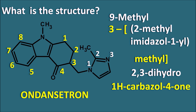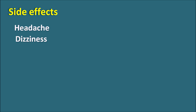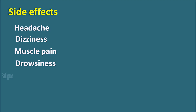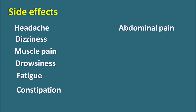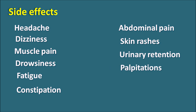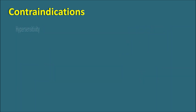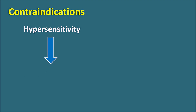Regarding side effects: Ondansetron mainly produces central side effects including headache and dizziness. Lightheadedness is observed in patients when the drug is given for longer periods. It can also produce muscle pain, drowsiness, fatigue, and constipation. Abdominal pain may occur, and when given by IV route, it can produce diarrhea. Skin rashes can also be observed. Other side effects include urinary retention, palpitations, tachycardia, and hypotension due to a decrease in blood pressure.